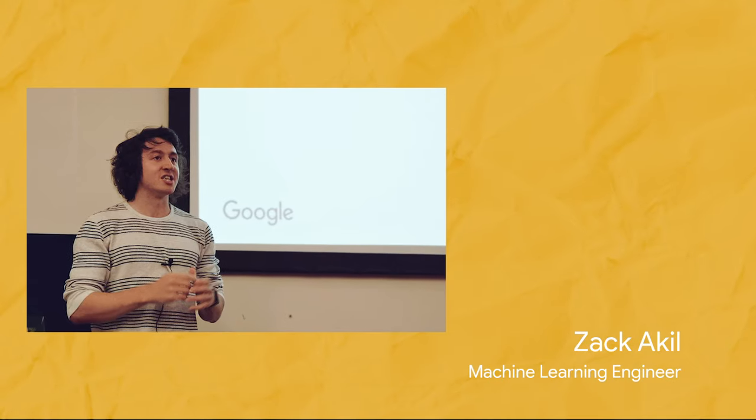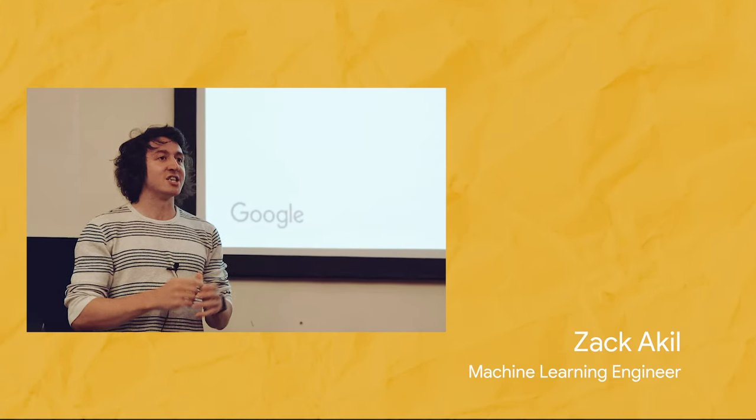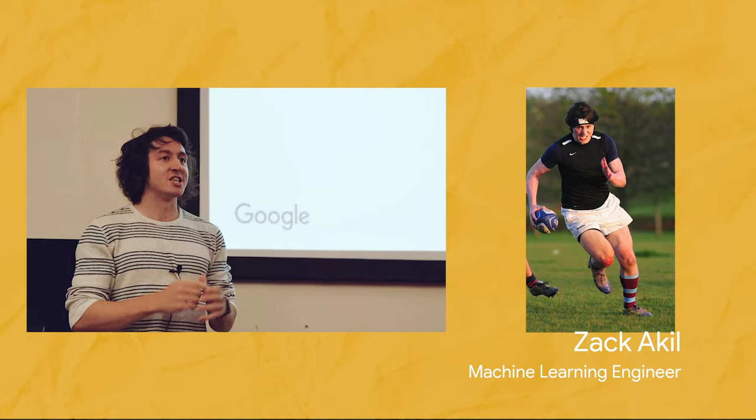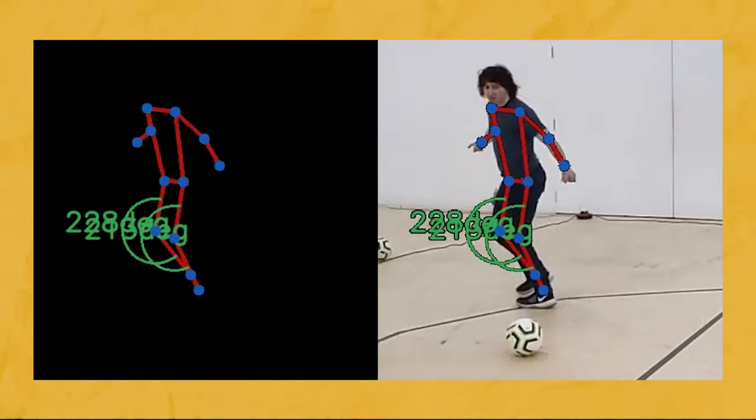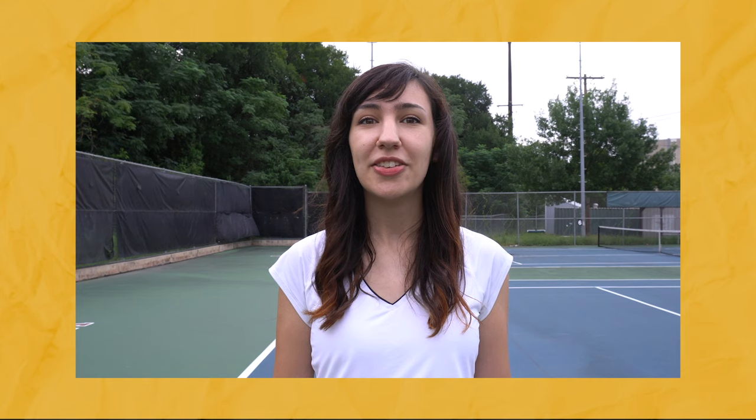And this basically describes my lifelong relationship with sports, until a couple of months ago when I learned that my friend Zach Akil, who's both a software engineer but also a competitive rugby player, was working on a project to analyze soccer kicks using machine learning. So in this episode of Making with Machine Learning, we'll talk to Zach to see how he did it. And then I'll try to adapt his techniques to my tennis serve. Stick around to see how I did it and how you can do it with your own data.